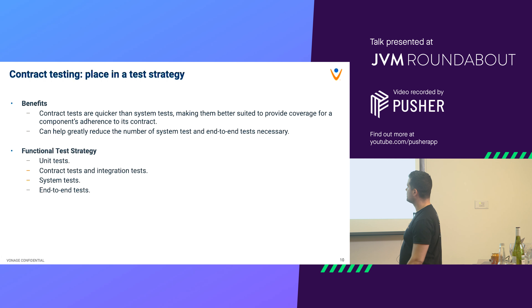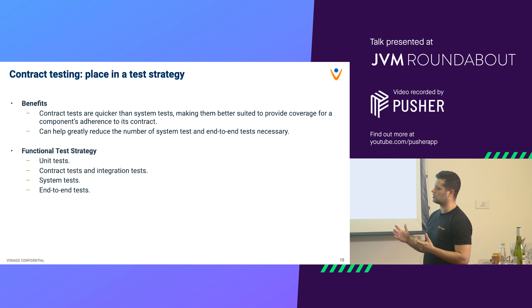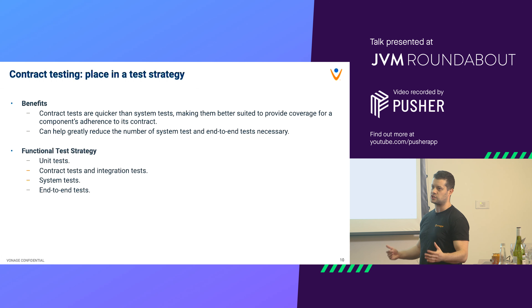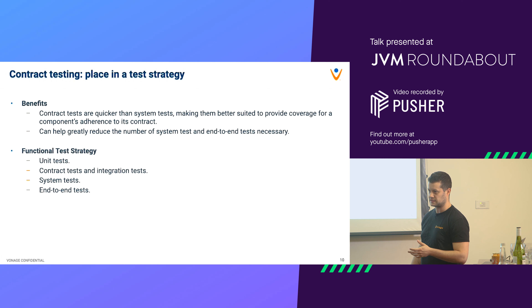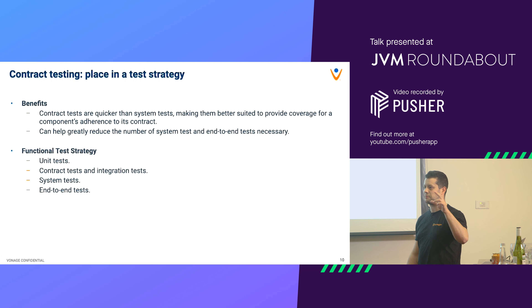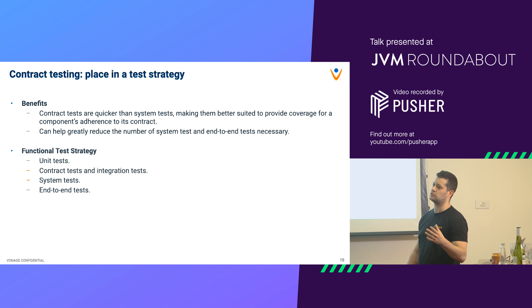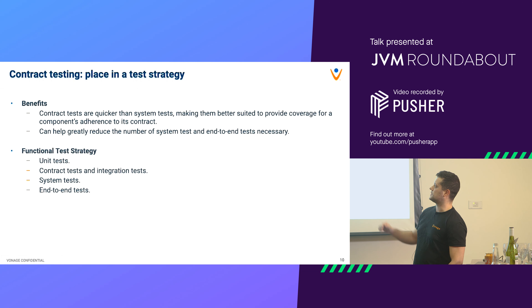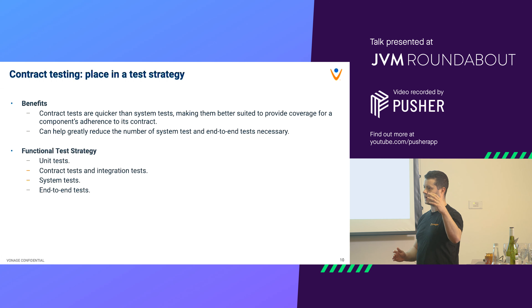In terms of overall test strategy, the point of contract tests is that they are much faster to execute compared to system tests — you don't need to test the entire chain. They can really help reduce the number of system tests and end-to-end tests. You want to test for coverage using contract tests, and then have a couple of happy path and maybe one unhappy path case as part of system tests and end-to-end tests, just to verify that all the moving parts are glued together.